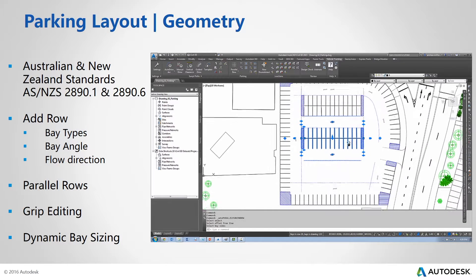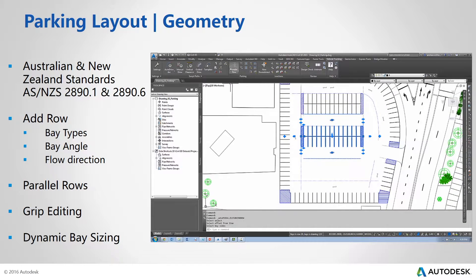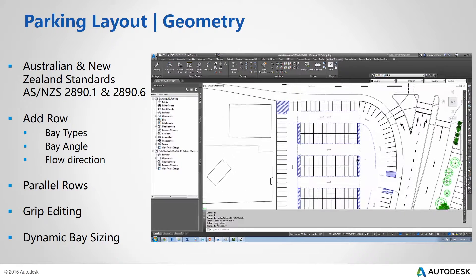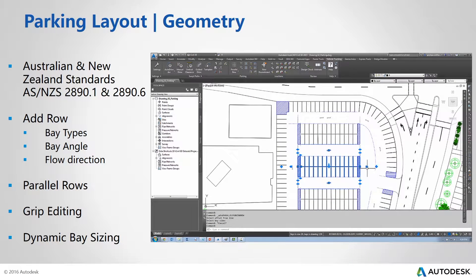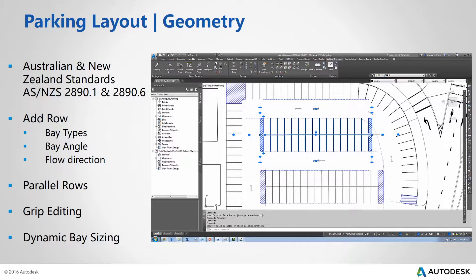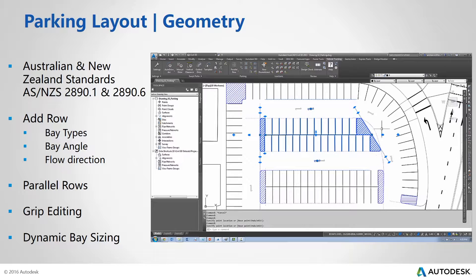So with our preliminary parking layout in place, we can now go back and adjust our layouts via the on-screen grips, so we can stretch the rows, add skews, adjust the bay aisles direction on-screen, and get immediate visual feedback.